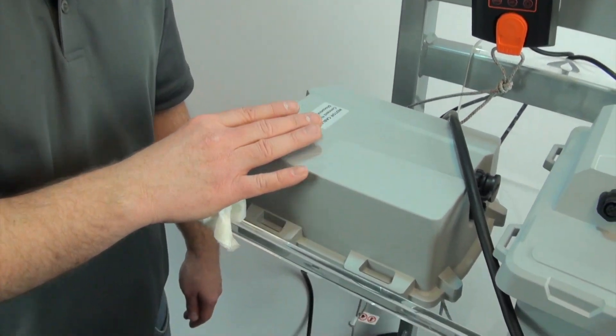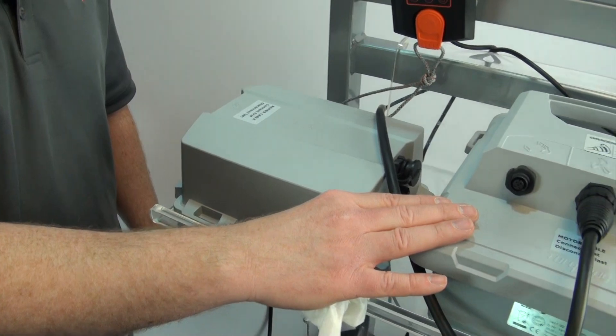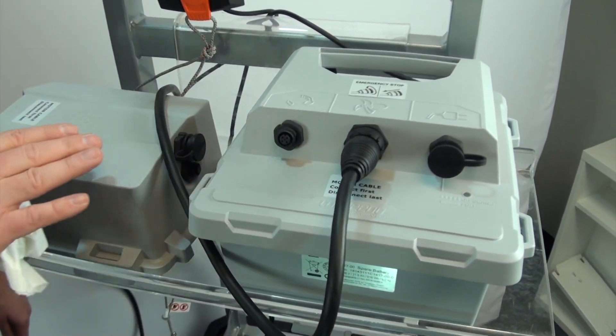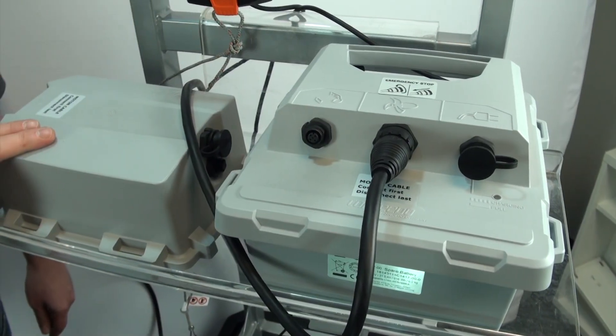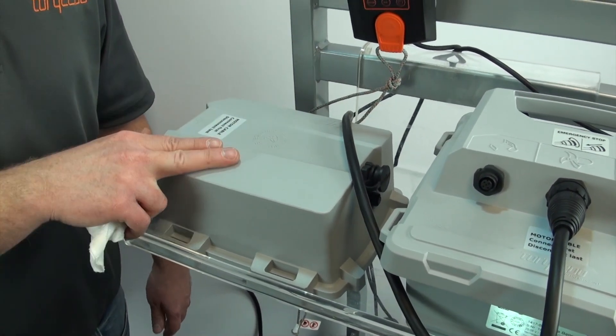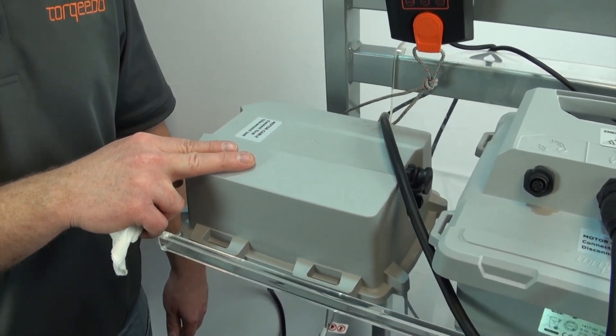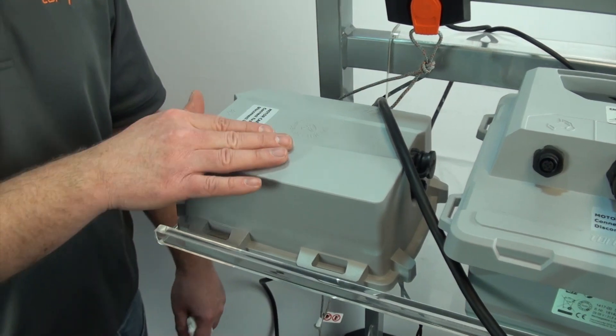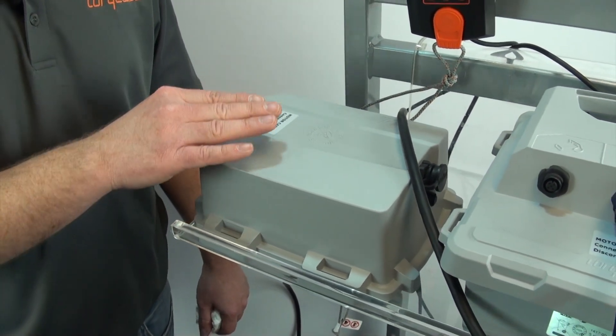If not, if you continue to get E30, potentially it can be the motor or if you have a 1413 series battery, it could be the battery itself. If you have a 1416 or 1417 battery, this would not be the case. If you have a 1413 battery, I would recommend contacting your service center or contacting us directly so we can figure out if the motor or the battery or both would need to go to the service center or return back to our facility for further analysis.